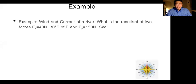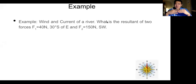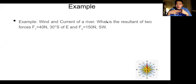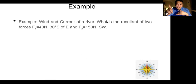Let's do our first example. You have a wind and a current — two forces acting on a sailboat. From the last video we had a sailboat diagram. These are the forces that act on the sailboat: the wind hitting the sail and the current pushing the sailboat. What is the resultant of the two forces? Force one is 40 newtons at 30 degrees south of east, and force two is 150 newtons southwest. Let's visualize this problem.